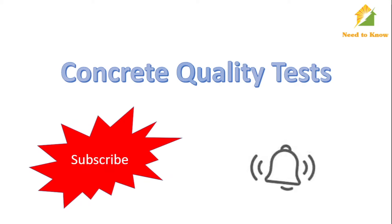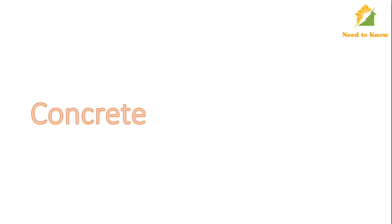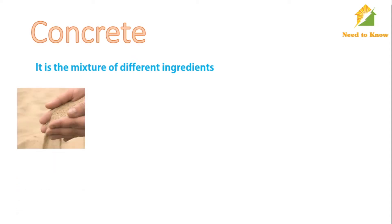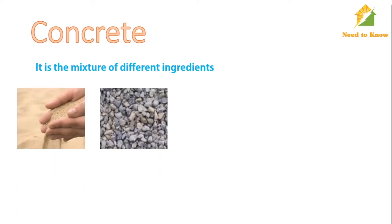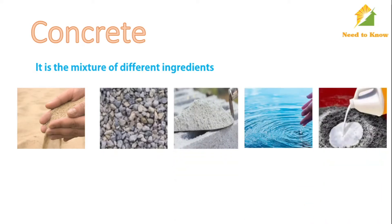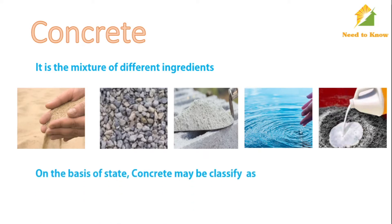Let's start with the topic. Concrete is actually a mixture of different ingredients. The ingredients include sand, coarse aggregate, cement, water, and admixtures. Sometimes we also use natural pozzolans as a replacement of cement, like fly ash, silica fumes, etc.